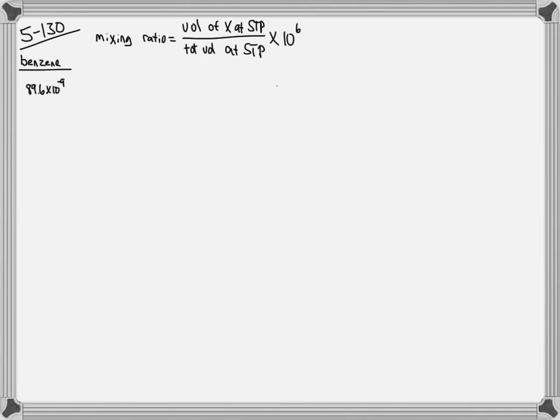In the case of benzene, to solve for the volume of benzene at STP, we need to take the mass of benzene and convert it to moles of benzene by dividing by the molar mass of benzene, 78.11 grams per mole. Now that we have moles of benzene, we can use the conversion factor of 22.4 to convert the moles of benzene at STP to liters of benzene at STP.